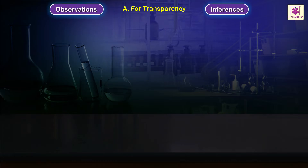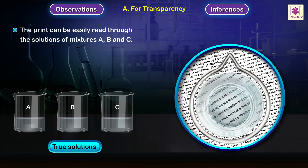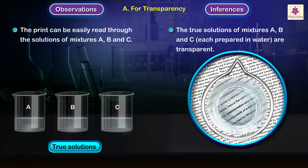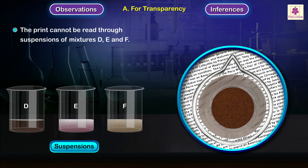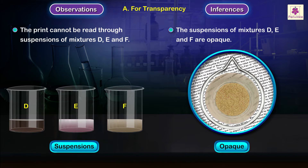Observations and inferences: The print can be easily read through the solutions of mixtures A, B and C. The true solutions of mixtures A, B and C each prepared in water are transparent. The print cannot be read through suspensions of mixtures D, E and F. The suspensions of mixtures D, E and F are opaque.